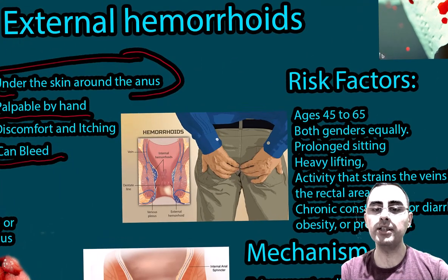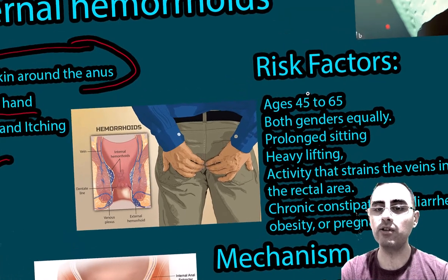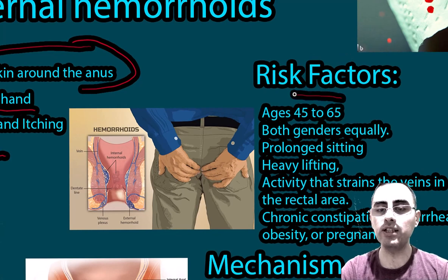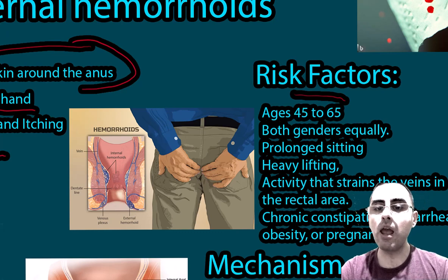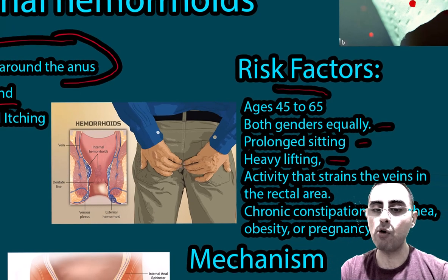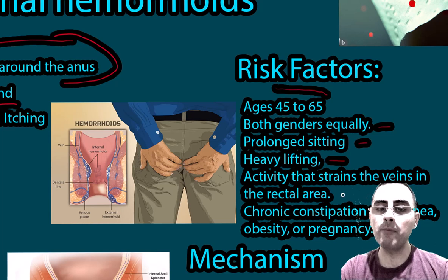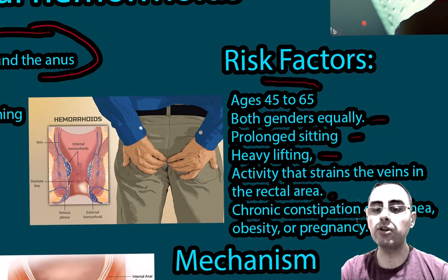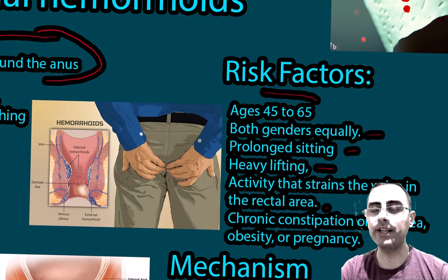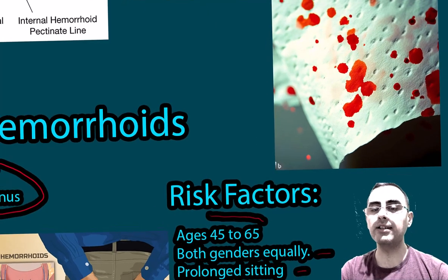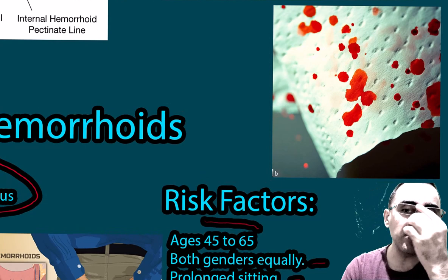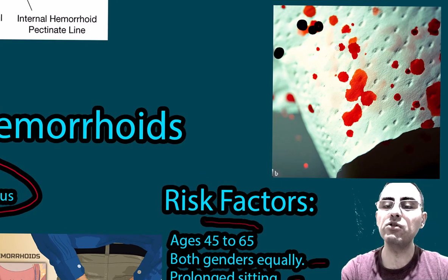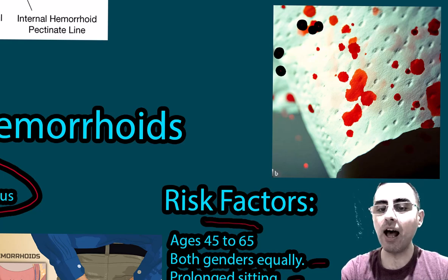What are the risk factors for hemorrhoids? The most common age of diagnosis is 45 to 65, though it can occur at earlier ages. It affects both genders equally. Risk factors include prolonged sitting, heavy lifting, and any activity that strains the veins in the rectal area. Chronic constipation or diarrhea, obesity, and pregnancy are also risk factors. The hallmark of the disease is bleeding — persons typically notice blood spots on toilet paper.